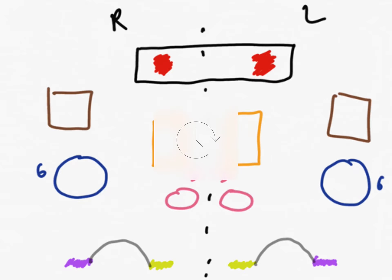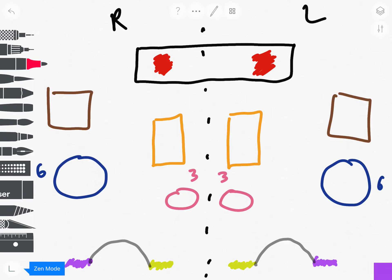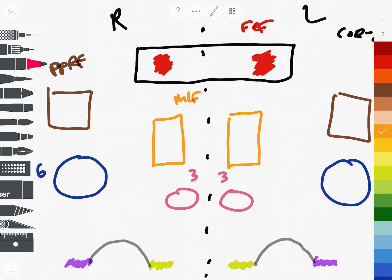So let's discuss what exactly happens in INO. First, let's begin with the cerebral cortex, which I have highlighted in black. Next, you have the frontal eye field in red, so FEF, on both sides. Then in brown, you have the PPRF, the paramedian pontine reticular formation. In orange, you have the MLF, medial longitudinal fasciculus. In 6 and 3, you have the two cranial nerves, 6 being abducens, 3 being oculomotor. And most importantly, in purple you have the lateral rectus, and in lime green you have the medial rectus.